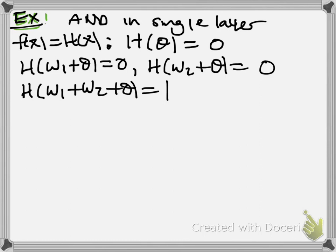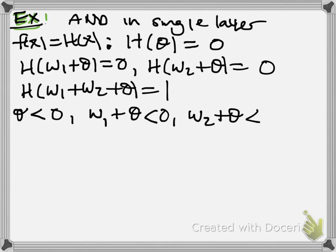So, how do we satisfy these restrictions by tuning parameters? Well, one way is to note the inequalities that these all suggest. First of all, we have that theta needs to be less than 0, because if theta is less than 0, then h of theta will be equal to 0. There's many things that we can pick that would satisfy that. But, we also need that w1 plus theta is less than 0, and we also need that w2 plus theta is less than 0. And then, finally, we need that w1 plus w2 plus theta is greater than 0.